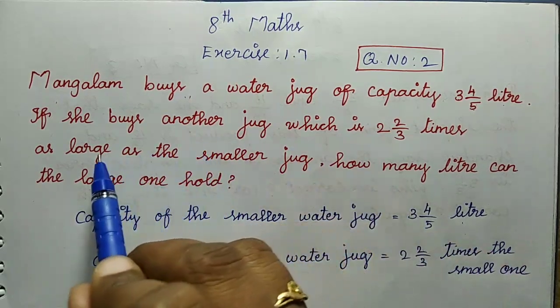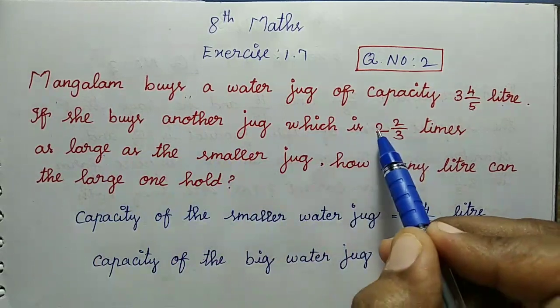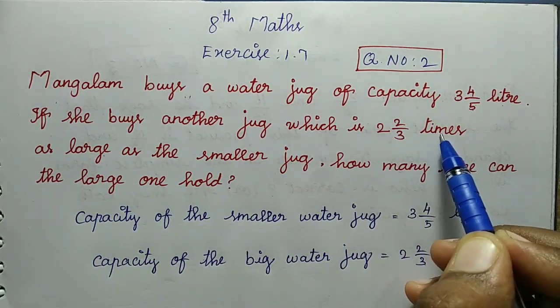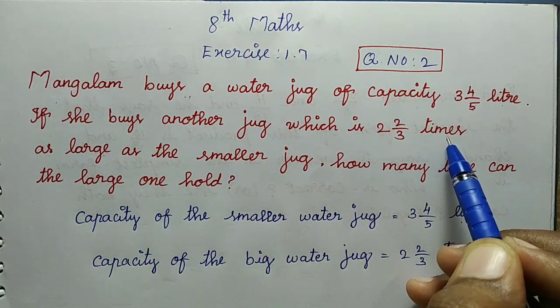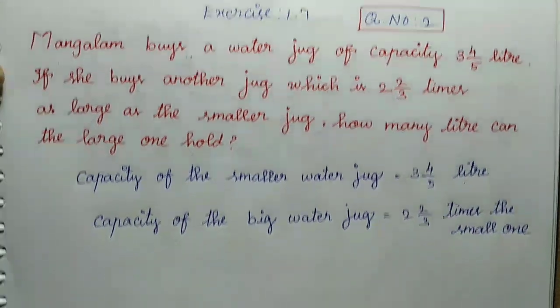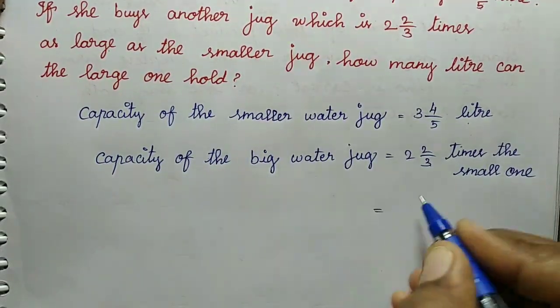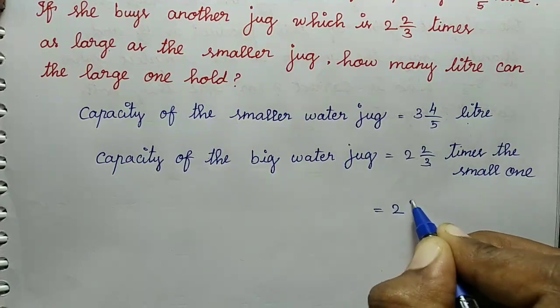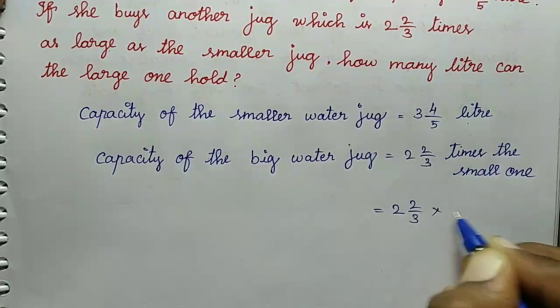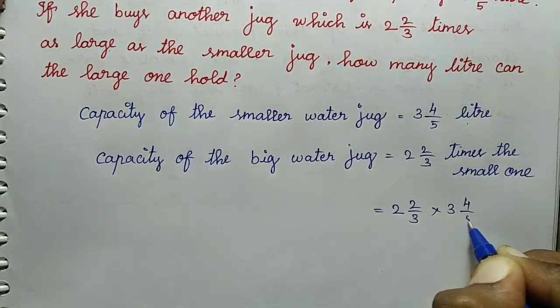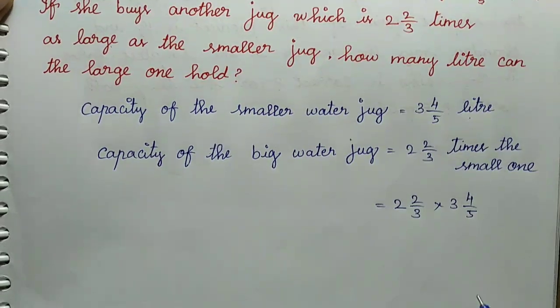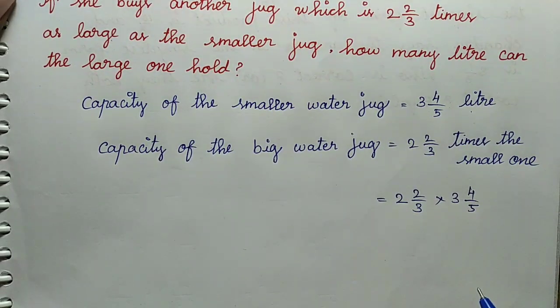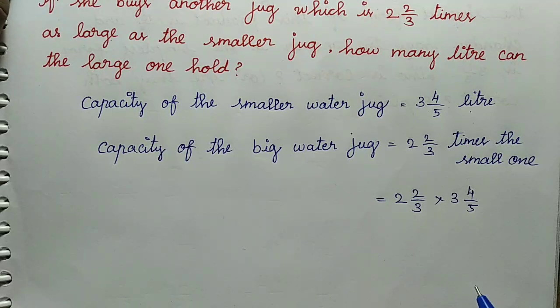So let's take a look at the larger jug. What do we find? Given value 2 multiply: 2 2/3 times 3 4/5. You multiply. In the 2 values may be mixed fraction, so the improper fraction are converted.